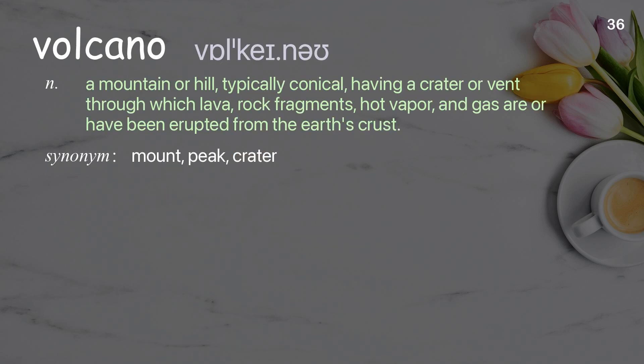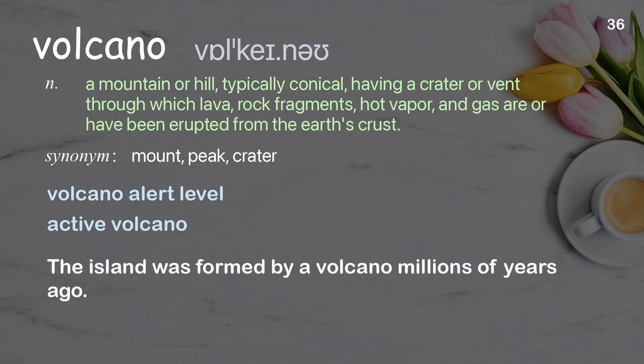Volcano: a mountain or hill, typically conical, having a crater or vent through which lava, rock fragments, hot vapor, and gas are or have been erupted from the Earth's crust. Examples: volcano alert level, active volcano. The island was formed by a volcano millions of years ago.